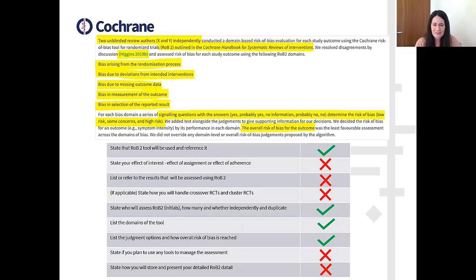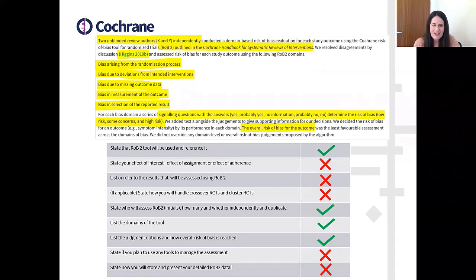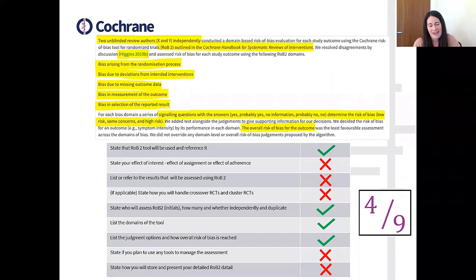Looking at the second example, you'd hope it addresses more of what we need in the protocol, but actually it doesn't address that much more. It has referenced the tool correctly — and the correct version of the handbook — though if you do a protocol now, you'd want to reference the 2022 version. One criticism is where the reference is placed: it appears after 'we resolve disagreements by discussion,' making it look like Julian Higgins resolved the disagreements. So that reference should move to the end of the first sentence. Overall, the second example addresses four of the nine items — referencing, who will do the assessments, listing the domains, and listing the judgment options — but missed out on some key points.